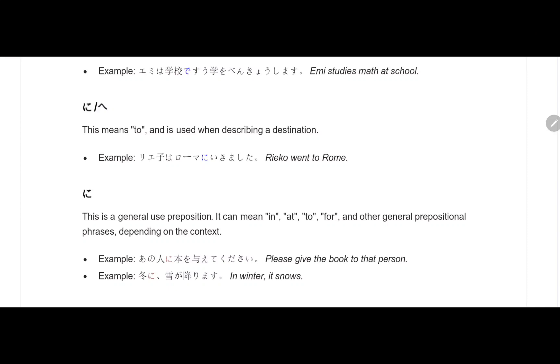This is a general use preposition. It can mean 'in', 'at', 'to', 'for', or other general prepositional phrases depending on the context. Anohito ni hon wo atayete kudasai. Please give the book to that person. Anohito - that person. Hon means book. Please give the book to that person.